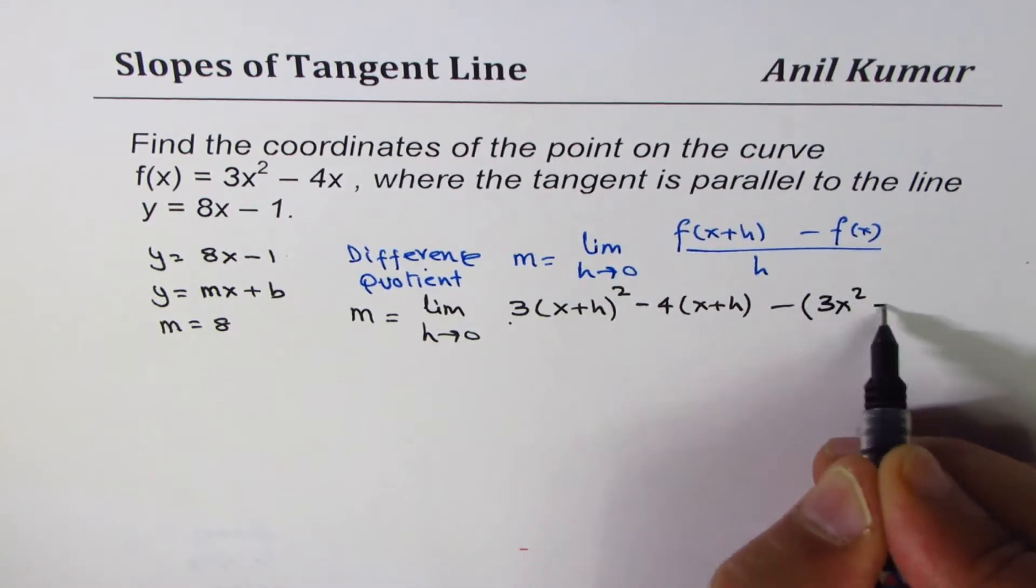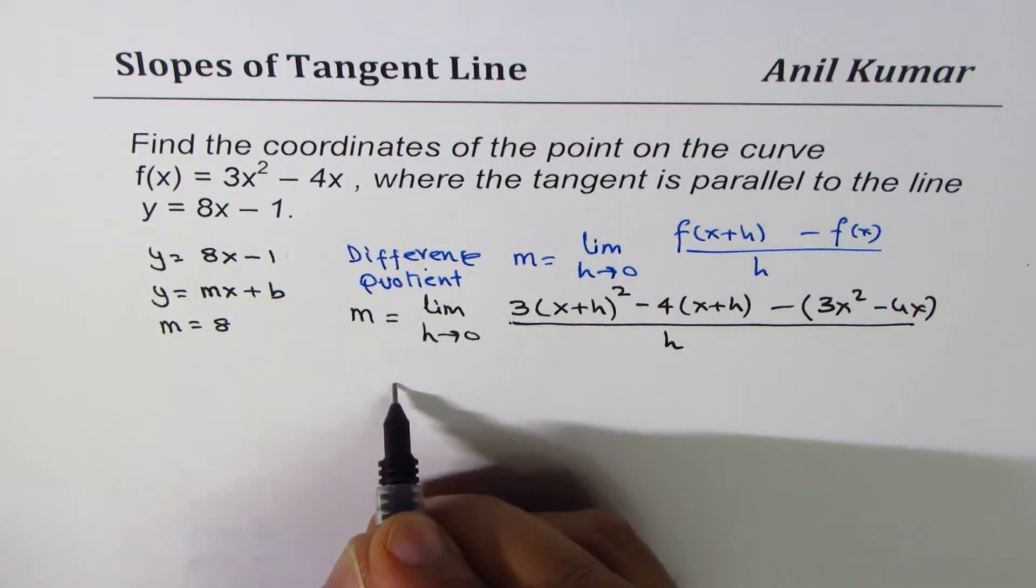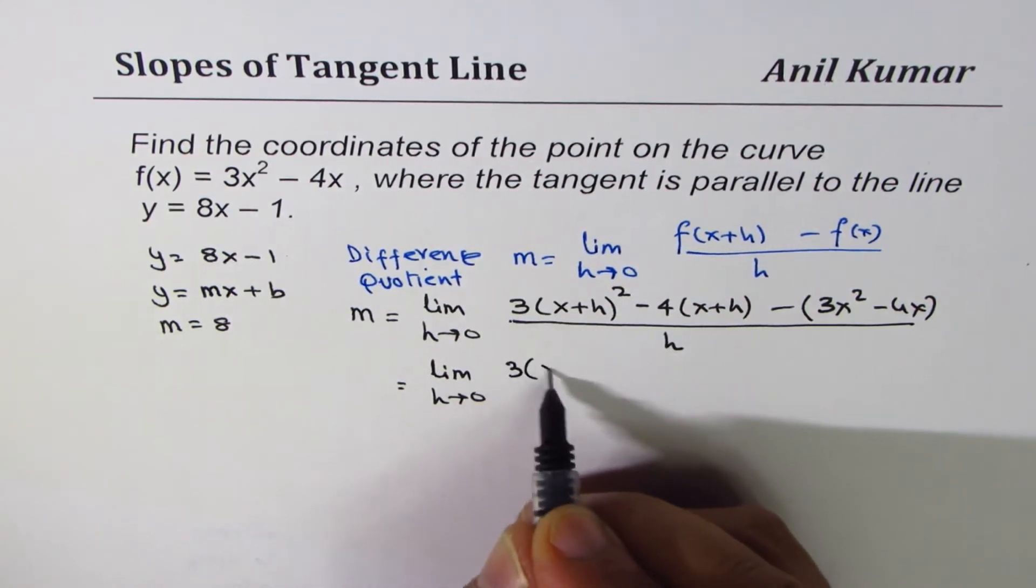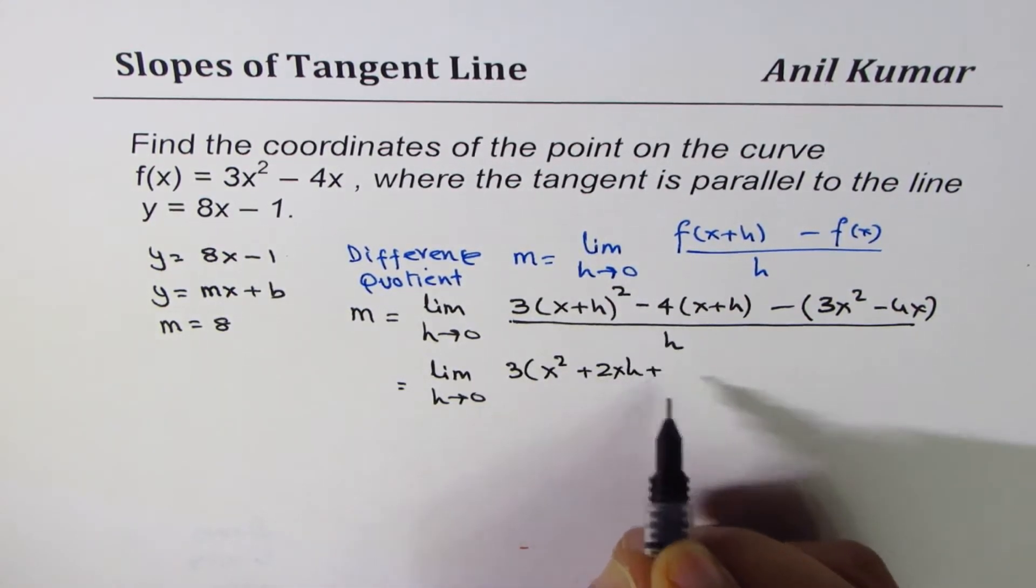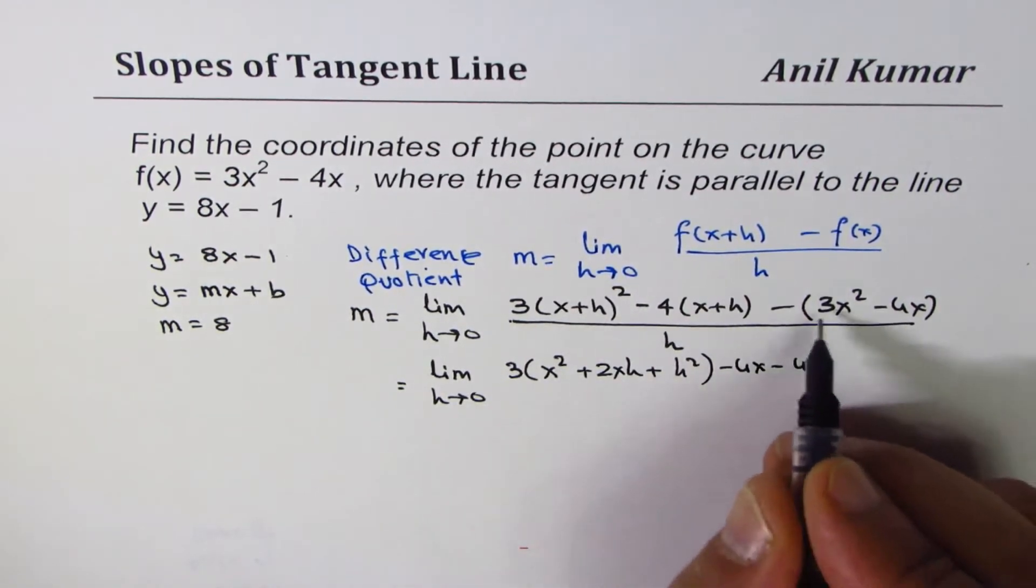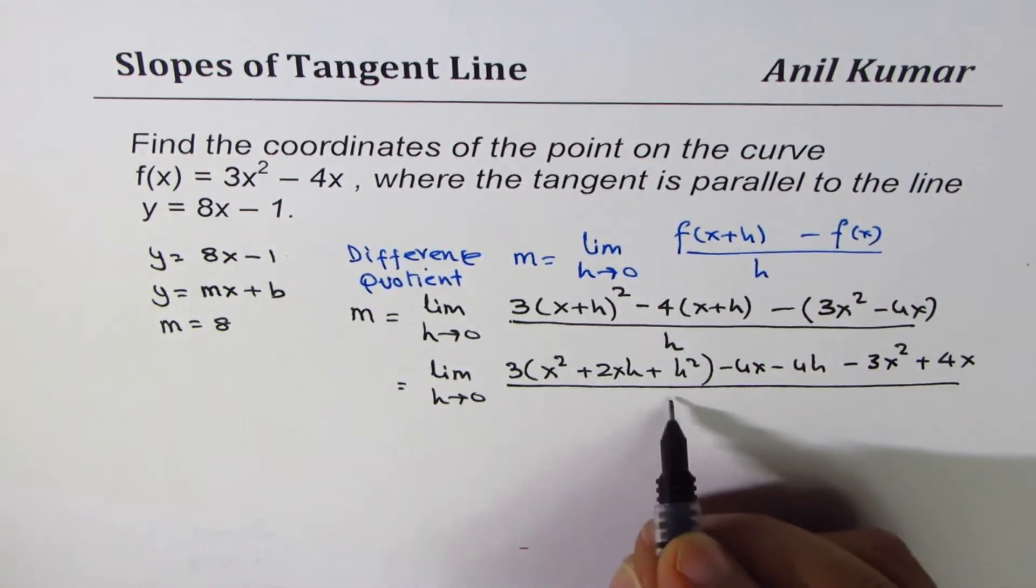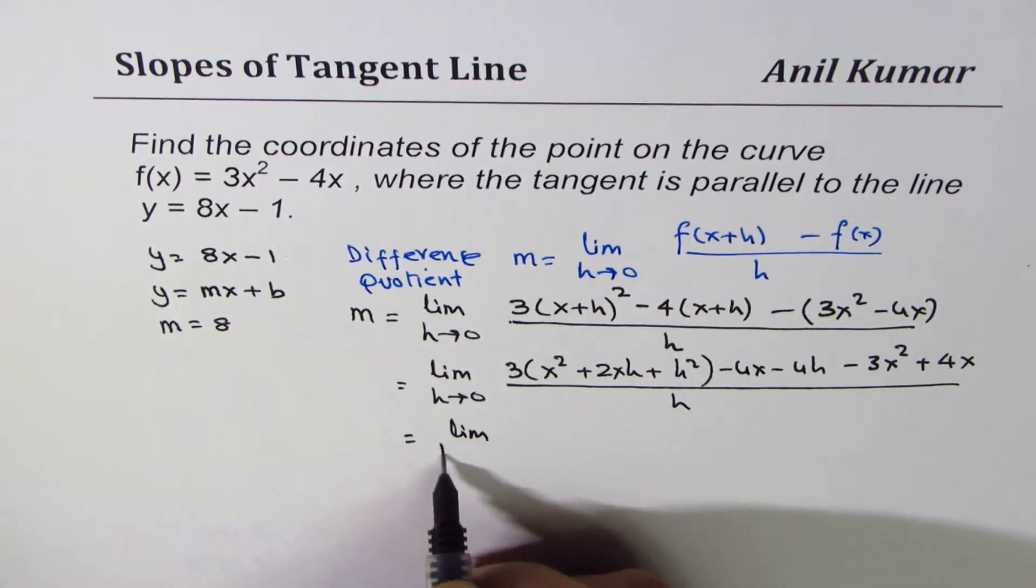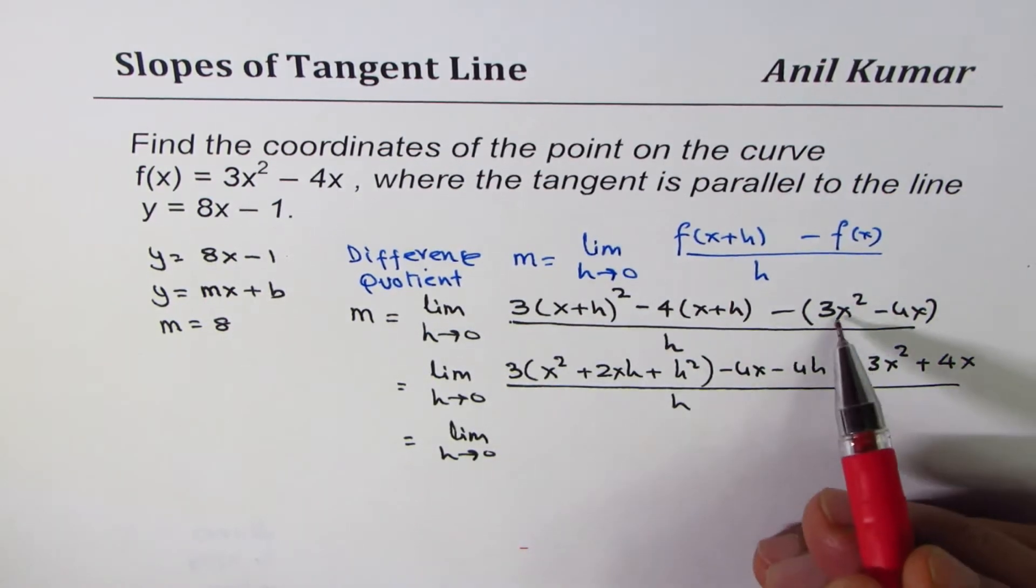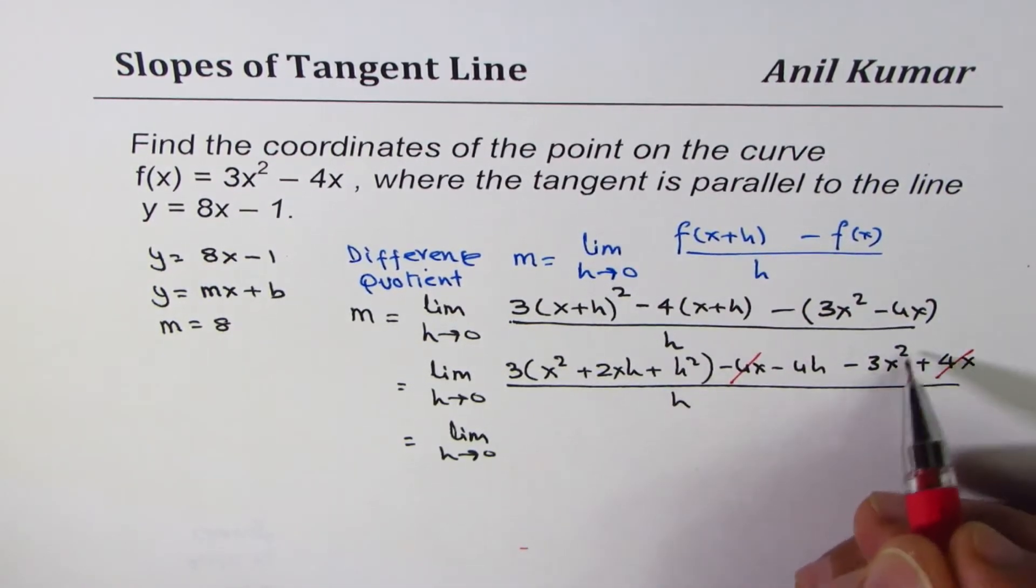That gives us lim(h→0) - let's expand this: 3(x² + 2xh + h²) minus 4x minus 4h, and we have minus 3x² plus 4x, divided by h. From here you can see these two terms will cancel. 4x minus 4x cancels, minus 3x² and 3x² will cancel.